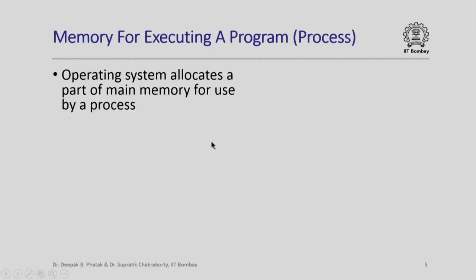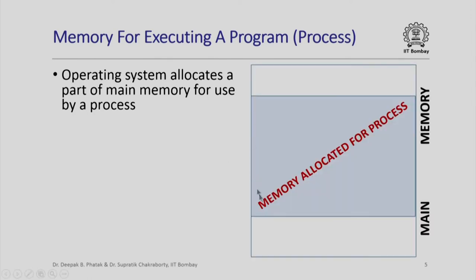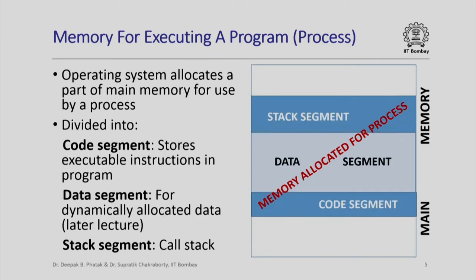Recall from an earlier lecture that when a program is executing it is called a process, and the operating system allocates a part of main memory for use by the process. That allocated memory is divided into three segments: the code segment, which stores the executable instructions; the data segment, which stores dynamically allocated data (more on that in a later lecture); and the stack segment, which stores the call stack. Every local variable of every function is allocated in the activation record of that function, which is stored in the call stack.